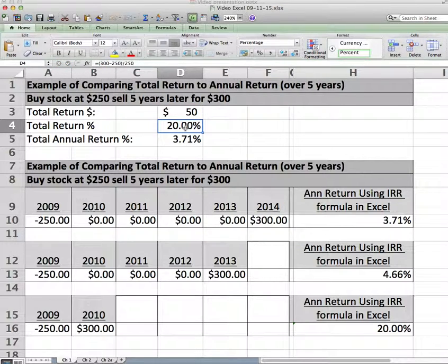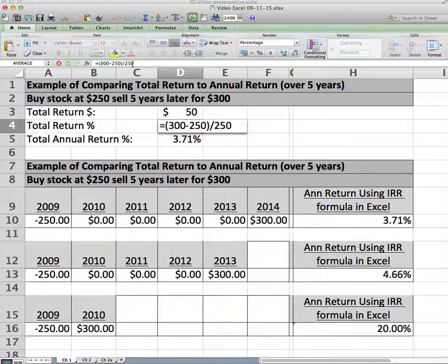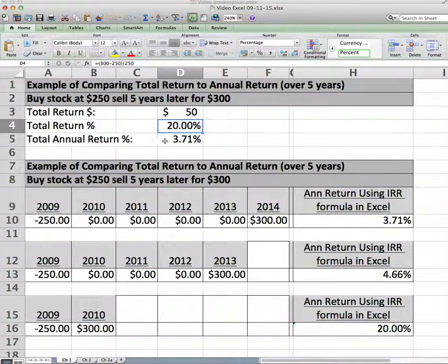So the total return is simply $300 minus $250 is $50. Total return in percentage is 20%. We took the ending number, $300 minus $250 divided by $250 is 20%. Now remember to do the order of operations and do the percentages, I mean the parentheses up above.